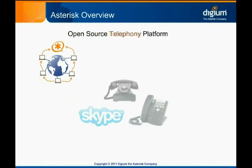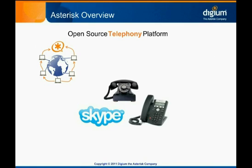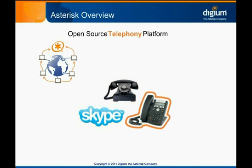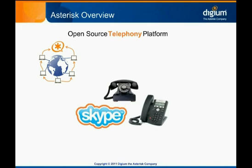Asterisk deals with telephony. It's capable of interfacing with almost all popular traditional telephone technologies and systems, as well as more modern technologies. Using Digium interface cards, Asterisk can communicate directly with analog phones and the public telephone network. It can also connect to all common VoIP, or Voice-over-IP, phones and systems. A software add-on called Skype for Asterisk makes it possible to bridge an Asterisk system to the millions of users on the Skype network.